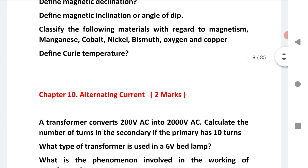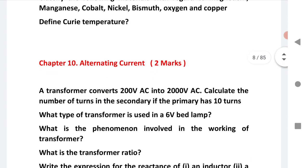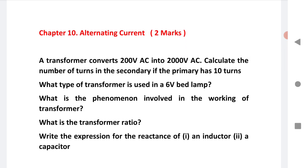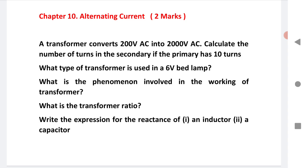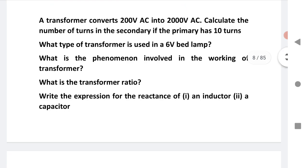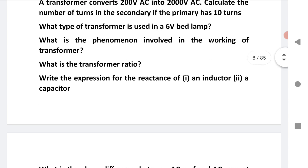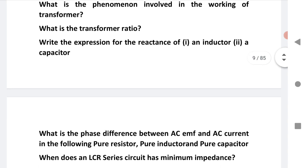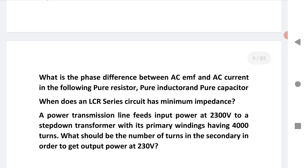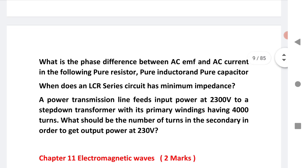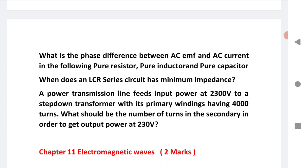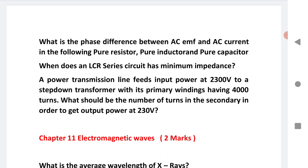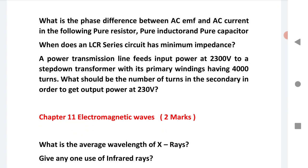Let us go to the next chapter, that is chapter 10, alternating current. Two marks, very important chapter that gives you two marks. A transformer converts 200V AC into 2000V AC. Calculate the number of turns in the secondary if the primary has 10 turns. What type of transformer is used in 6 volt bed lamp? I am expecting this question may come in board exam. What is the phenomenon involved in working of a transformer? What is the transformer ratio? Write the expression for the reactance of an inductor and a capacitor. What is the phase difference between AC EMF and AC current? Next numerical problem: transmission line feeding input power at 2300 volts to step down transformer - this is a numerical problem, solve it.